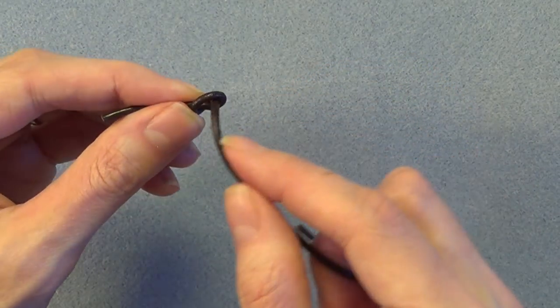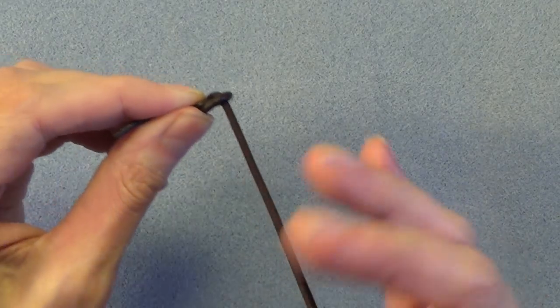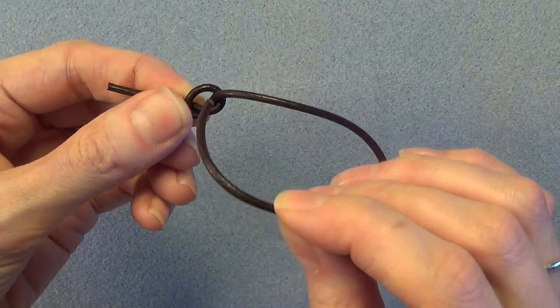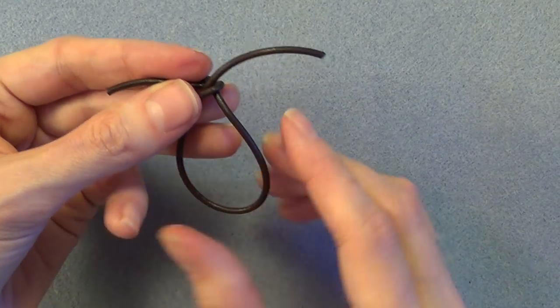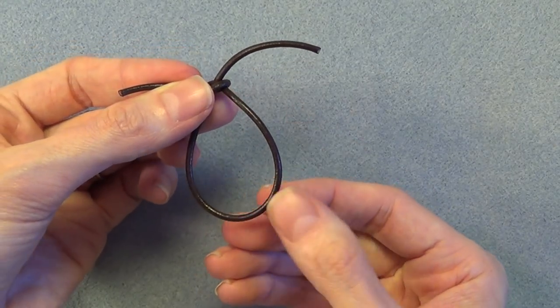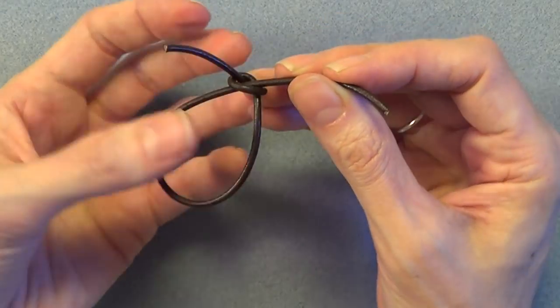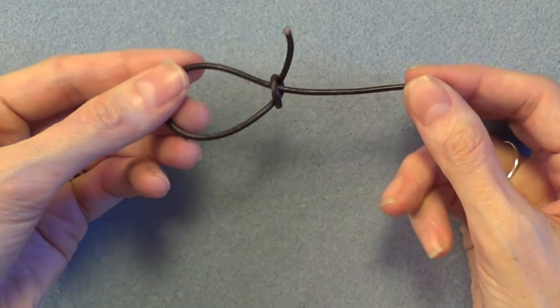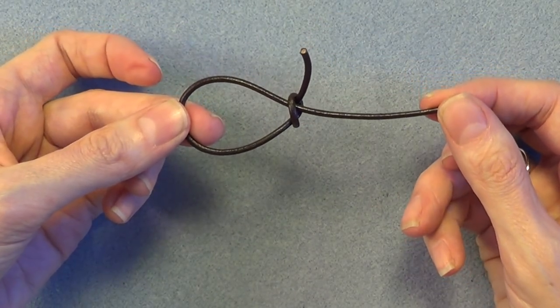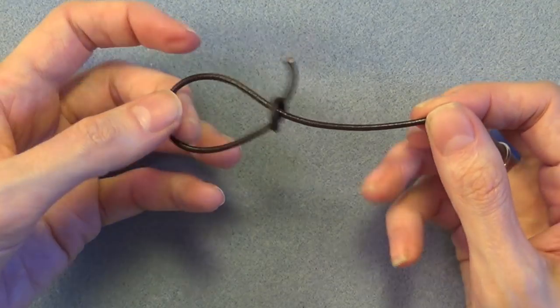Now take the long end of the leather, this is going to be our working end, pass it up through the center of the knot going in through the same side as the tail is coming from so it's basically making a u-turn. This will create the large loop that's going to be the bottom of your figure eight so go ahead and get that roughly the size you want it to be making sure you have at least a couple inches left on the top to create the smaller loop.